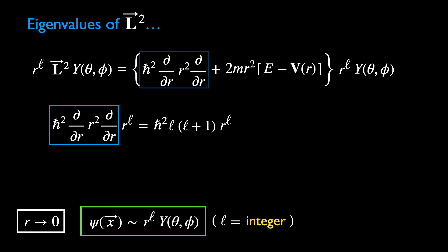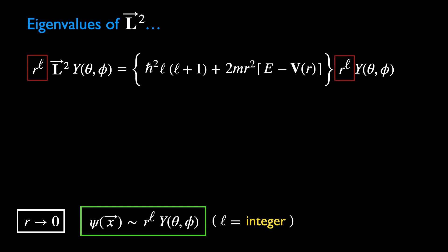Substituting this back into the equation above. r^l now cancels between both sides of the equation. Pay attention. Here's the crucial point.